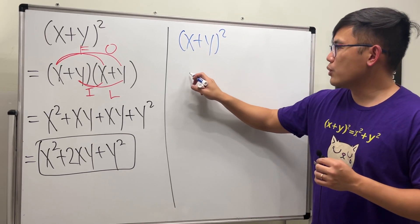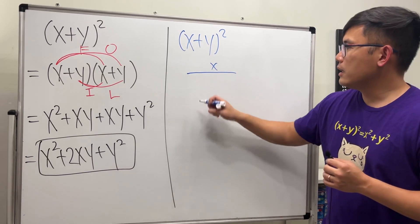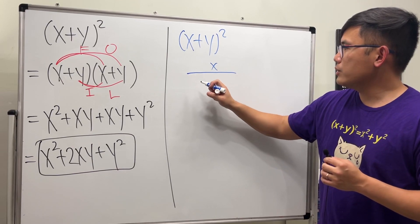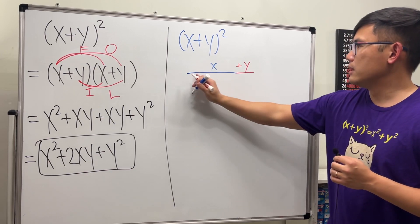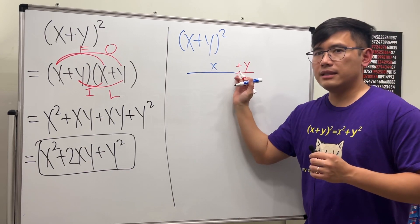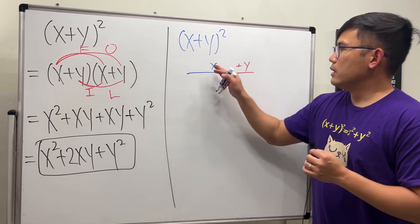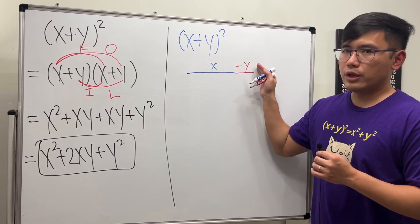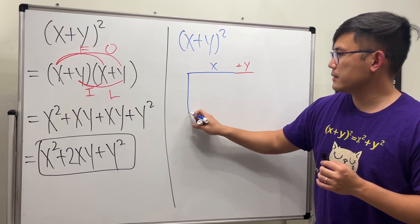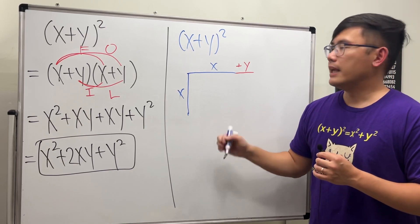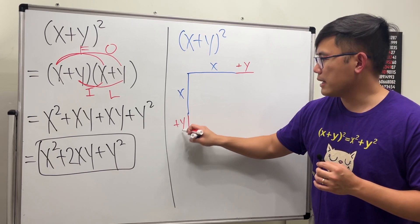I'm going to draw x as a segment, assuming x and y are both positive, and then add y to it. The blue segment is x and the red segment is y — they represent lengths. Since we have x plus y here, I'm also going to have x on the vertical side, and copy down the y segment there too, so both sides are x plus y.